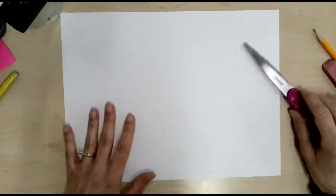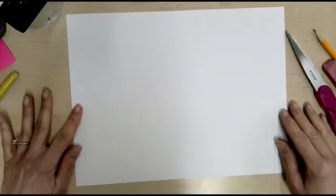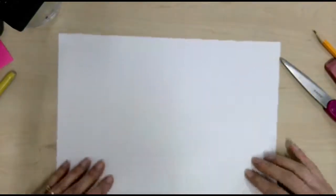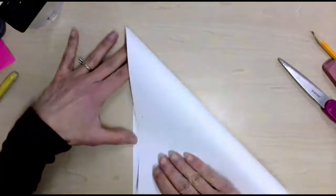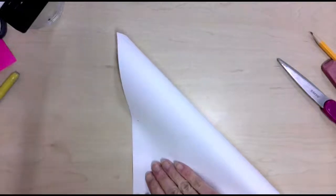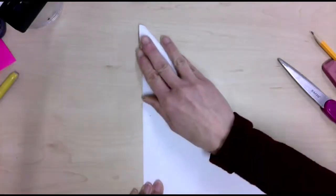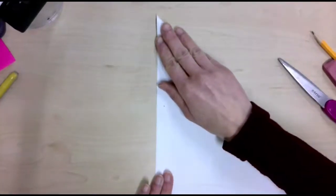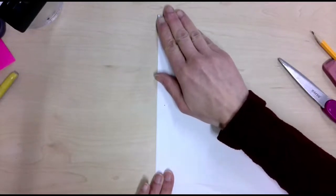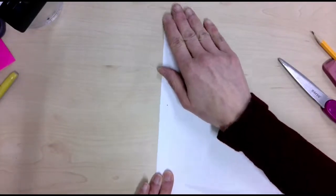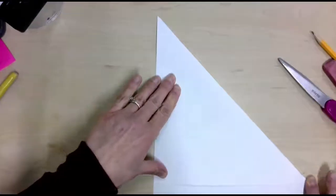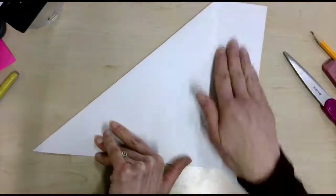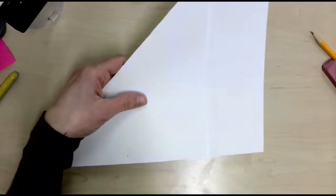To get started we need a square piece of paper and right now we have a rectangle. The way to turn this into a square is just to take one corner, pull it down and match it up to the side. Be careful to match that point up as close as you can to exactly. And then just seal that down and that's going to give you a space like this that you are going to cut off.